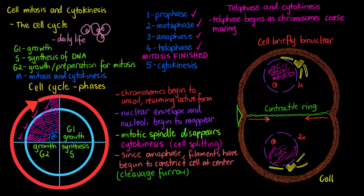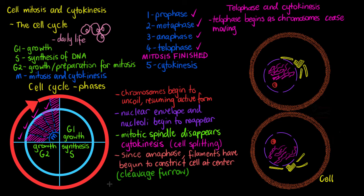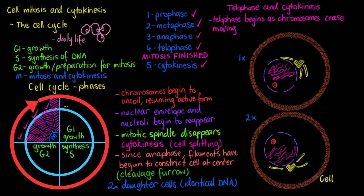Since early anaphase, the contractile ring has been constricting continuously, and eventually our cell will completely split in two down the middle. Each cell will have its own plasma membrane, and the mitotic phase is fully complete. We now have two new daughter cells, each with identical DNA. Cytokinesis has finished, bringing about the end of the mitotic phase of the cell cycle.